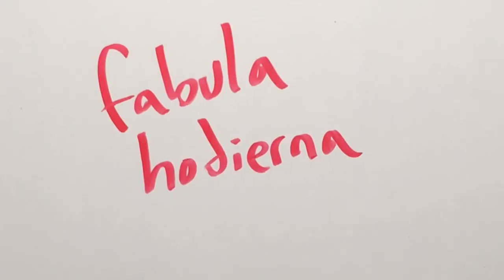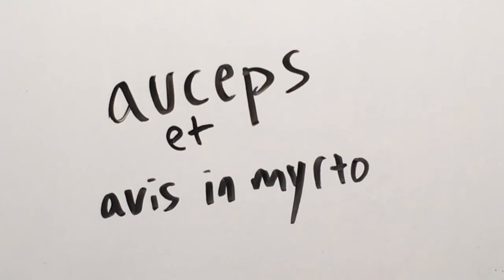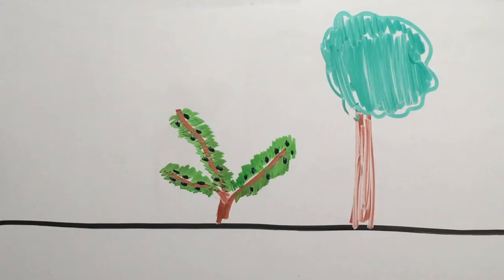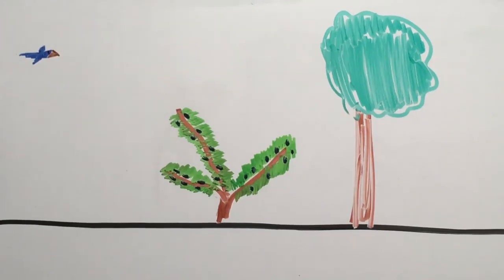Fabula hadierna est aukeps et avis in myrto. Olim, avis per silvam volabat, cibum quaerens. Subito, myrtum vidit.